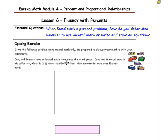Corey and Everett have collected model cars since third grade. Corey has 80 model cars in his collection, which is 25% more than Everett has. How many model cars does Everett have? So we're going to solve this problem without using an equation. It says to use mental math. When you use mental math, it's not a bad idea to draw a diagram to help you understand the problem.